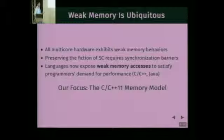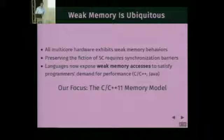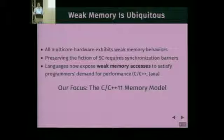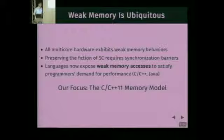Now, why do we care about weak memory? In fact, weak memory is everywhere. All multi-core hardware exhibits these weak memory behaviors, and preserving the fiction of a sequentially consistent memory model is very expensive. Of course, programmers don't like that. So now, in modern languages, you can use these weaker accesses to get the maximum performance out of your multi-core hardware. For example, the C, C++ languages and Java have these accesses. Our work focuses on the C, C++ 11 memory model.